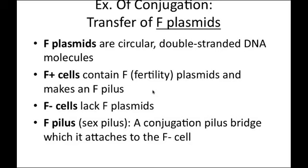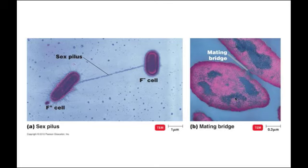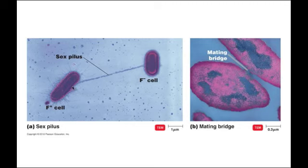F-plasmids facilitate conjugation: an F+ cell transfers to an F− cell, making a new F+ cell. Microscopy images show these structures — a short mating bridge between two cells, or a long sex pilus serving as the conjugation bridge. The sex pilus is a unique type of pili that builds the bridge through which DNA is transferred to the other cell.